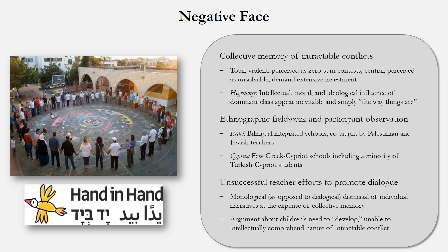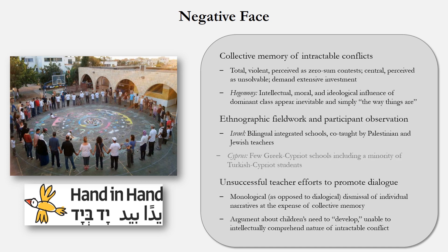So how does this work in actual classrooms? The authors of reading three each drew from their extensive experiences conducting ethnographic research and observing classroom environments. In Israel, they looked at bilingual integrated schools for Palestinian and Jewish children — in particular, schools associated with an NGO originally created by a Palestinian and an American Jew, called the Center for Bilingual Education in Israel, now known as Hand in Hand. Notably, classrooms at these schools have two teachers — one Palestinian and the other Jewish. In Cyprus, they looked at some of the few Greek Cypriot schools that have Turkish Cypriot children whose families either stayed south after the war of 1974 or moved there more recently.